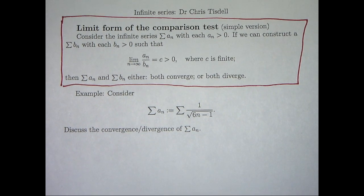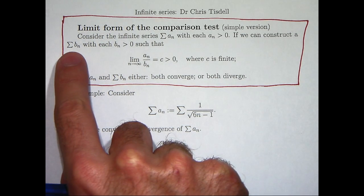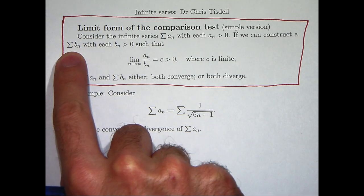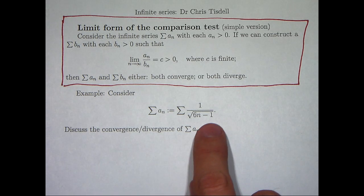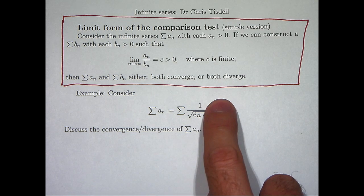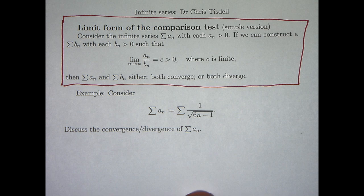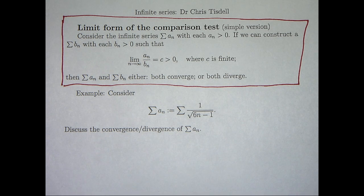So the big question here is if we're going to construct this new series, how do we choose it? Well, here you can see that the largest power in the denominator is power one half. The largest power in the top is power zero. Now, we can make a choice of our new series by looking at the difference between those powers.